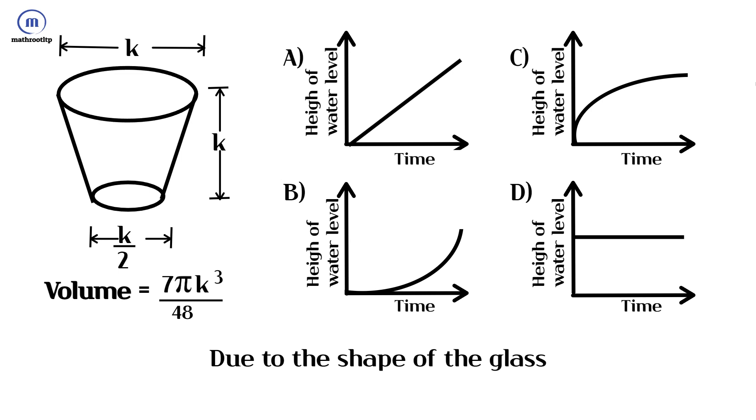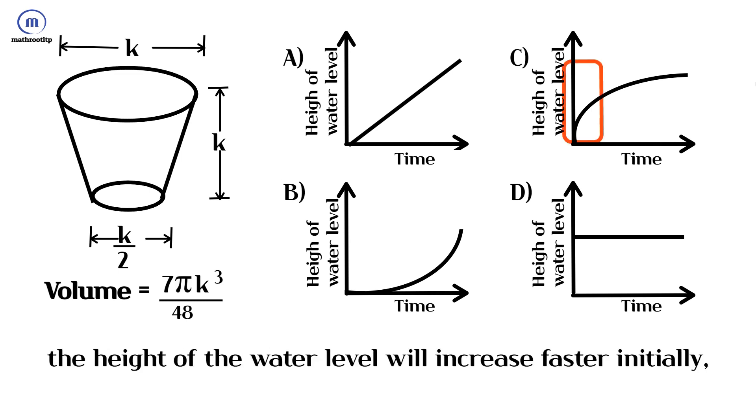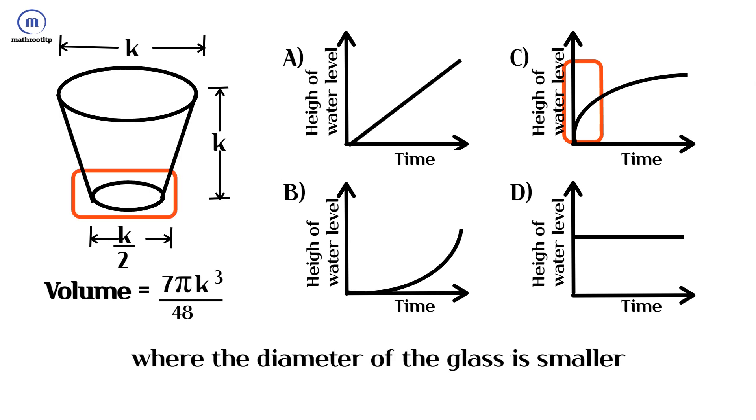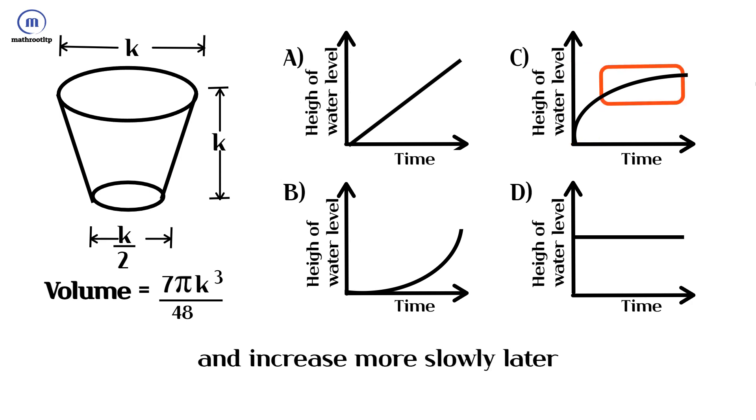Due to the shape of the glass, if water is poured at a constant rate, the height of the water level will increase faster initially where the diameter of the glass is smaller, and increase more slowly later as the diameter of the glass increases.